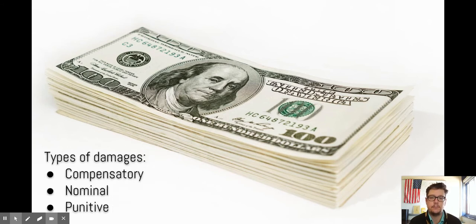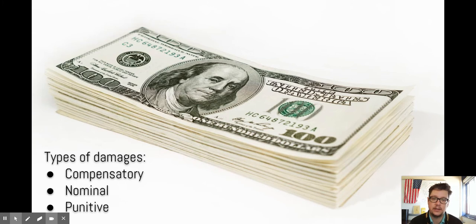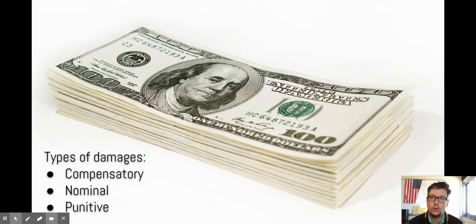There are three main types of damages. Compensatory — that is going to pay for the real damages. Those could be medical bills, damage to property, or emotional distress. If someone is permanently injured or has an emotional problem and their life has been altered, they can sue for that. That's compensation.